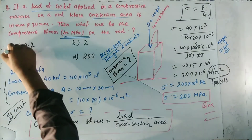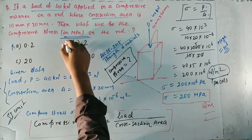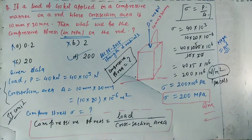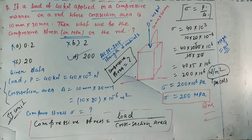Sigma equals 200 Mega Pascal, so option D is the correct answer. Options A, B, and C are wrong. The correct answer is option D: 200 Mega Pascal is the compressive stress.